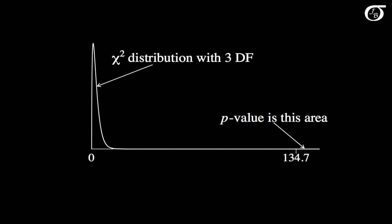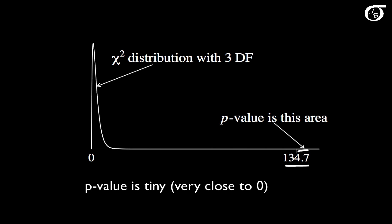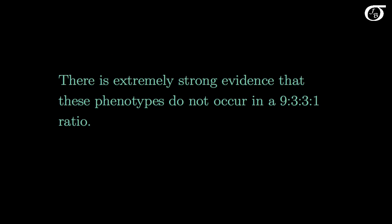Here is the chi-square distribution with 3 degrees of freedom, and the observed value of our test statistic plotted on it. The p-value is the probability of getting this value or something even farther to the right if the null hypothesis is true — the area to the right of our test statistic. The p-value is extremely small, very close to 0, meaning there is very strong evidence against the null hypothesis: these phenotypes do not occur in a 9 to 3 to 3 to 1 ratio.